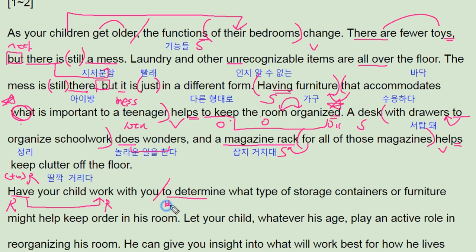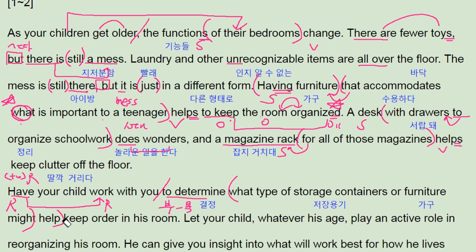To determine — to부정사 부사예요. 목적이죠. 목적으로, 결정하기 위하여 what type of storage container 혹은 furniture가 아마도 도움이 될지. Help 뒤에 또 동사원형 쓰고 있어요. 사실상 to keep을 해석하는 게 더 좋죠. Keep order이에요. 유지하기 위해서 그의 방을. Order이 무슨 뜻이냐면 원래 질서라는 뜻인데 여기서는 질서 정연하게, 깨끗하게.